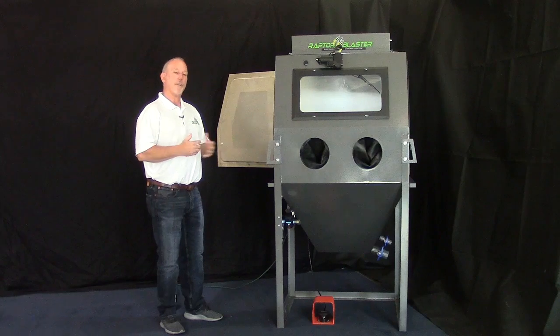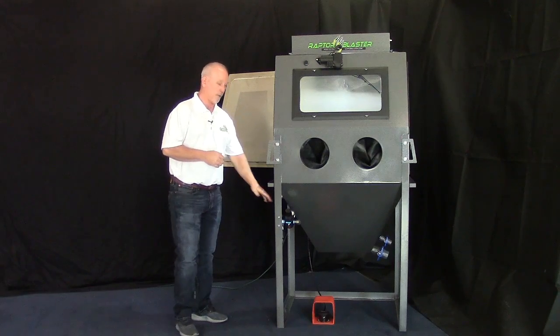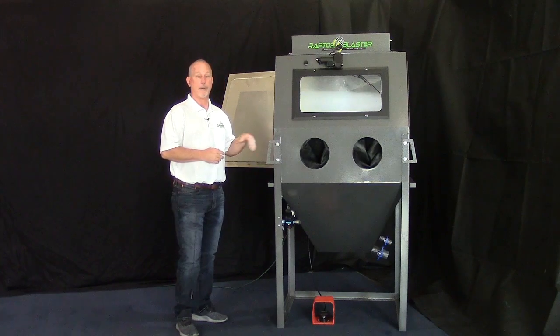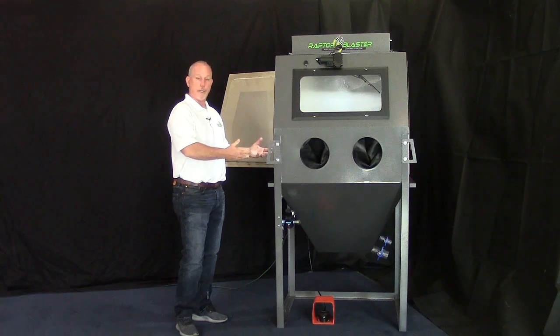So all you need to do to hook this cabinet up is basically hook air to the air regulator. Air regulator passes the air on into the gun, fill it with water and media.